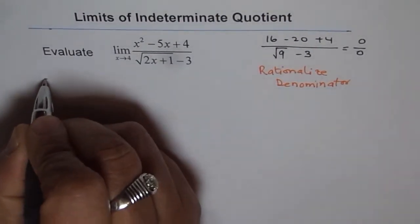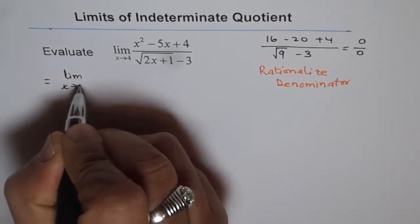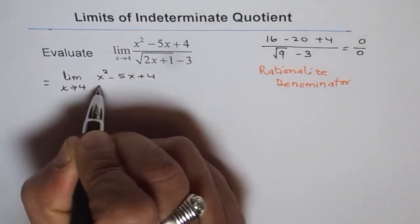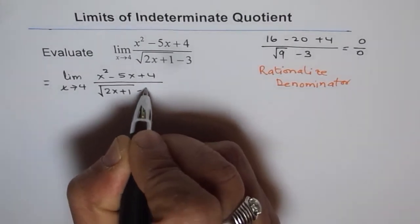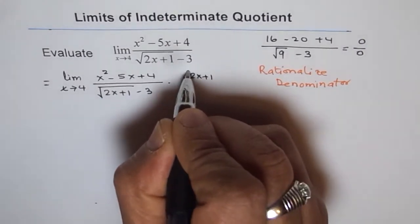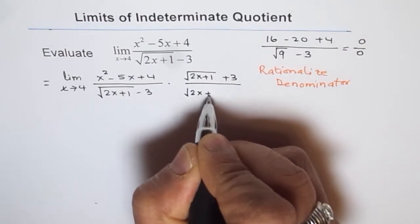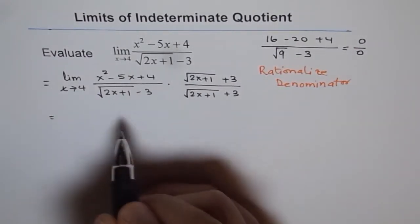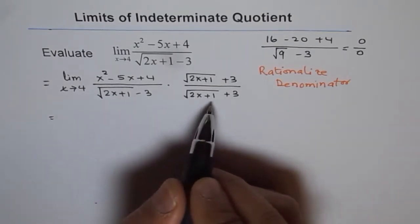Let's rationalize the denominator and see what we get. The expression is the limit as x approaches 4 of x squared minus 5x plus 4, divided by square root of 2x plus 1 minus 3. To rationalize, we multiply by square root of 2x plus 1 plus 3 over square root of 2x plus 1 plus 3. We should not expand the numerator, but we will expand the denominator using the difference of squares.